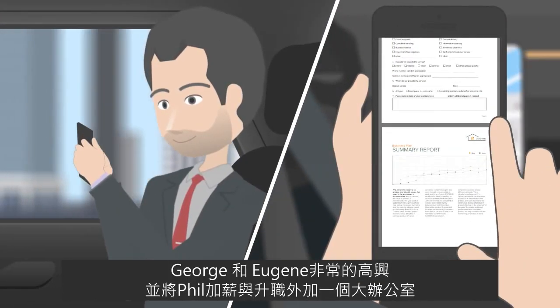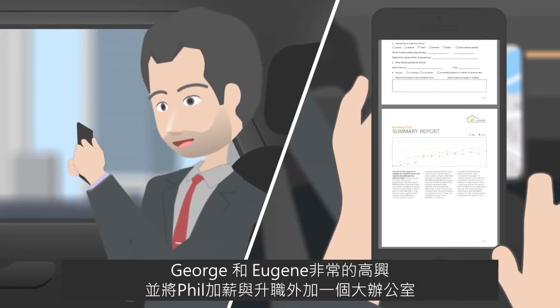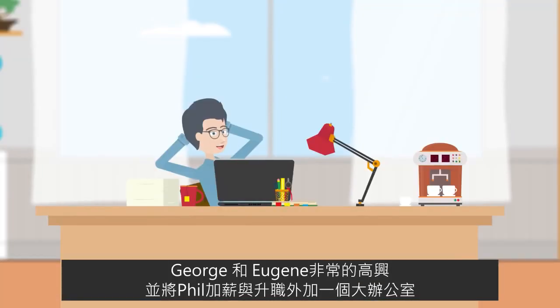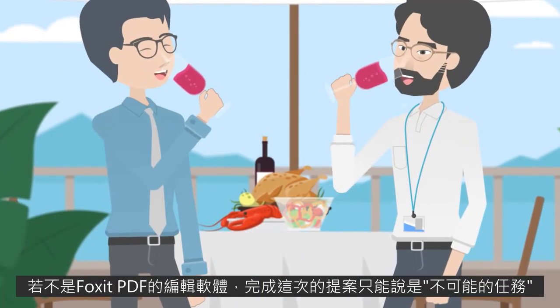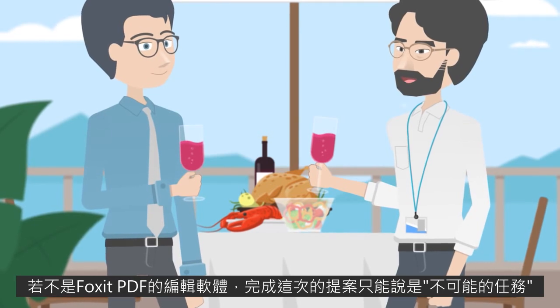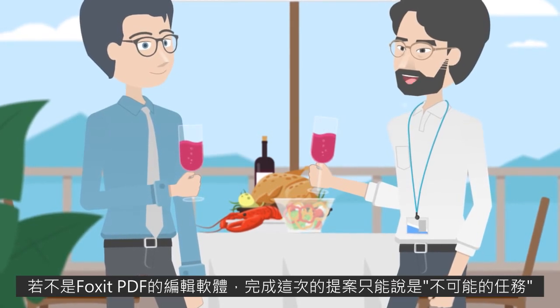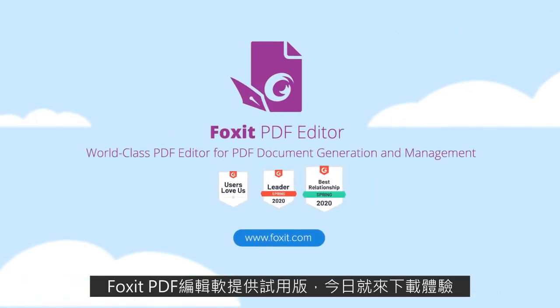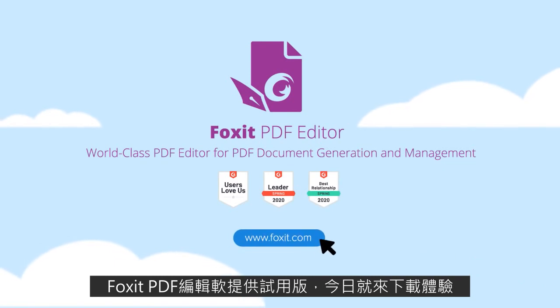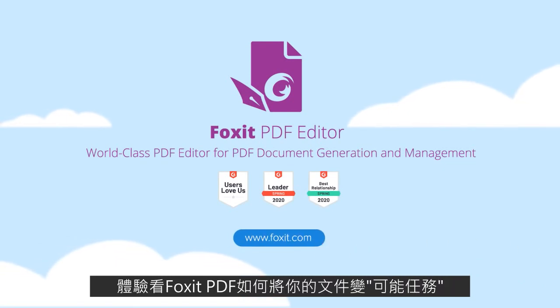George and Eugene were so happy. Phil now had the corner office and got a big raise. He used some of that raise to take Dan out to lunch, since without Foxit PDF editor, completing the project would have been mission impossible. Download a free trial of Foxit PDF editor today and see how it can make all your document missions possible.